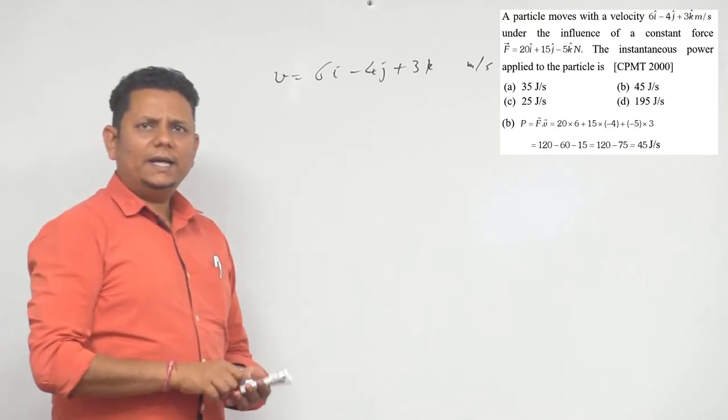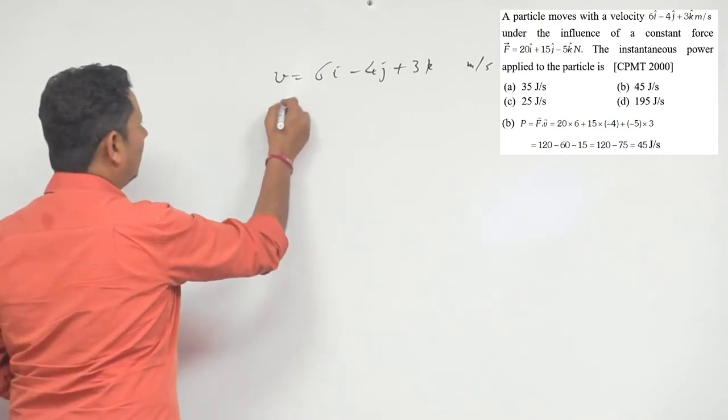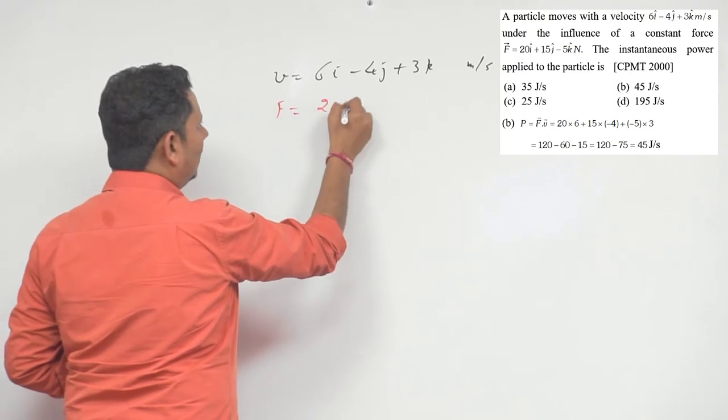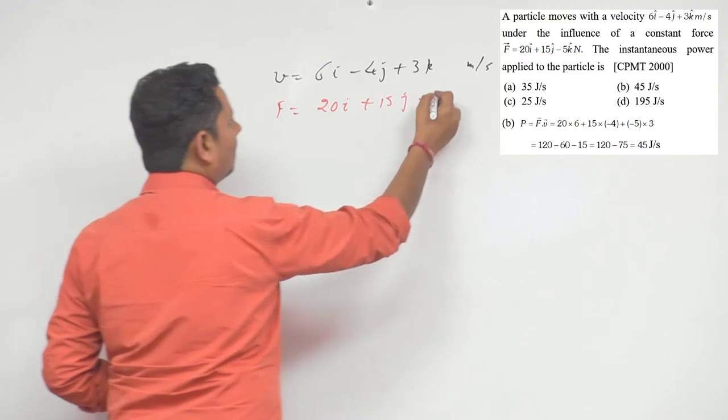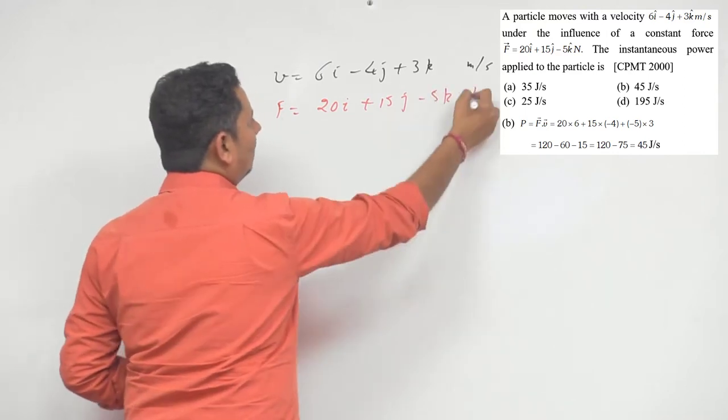Next, force is given as 20i cap plus 15j cap minus 5k cap newtons. This is the force given to us.